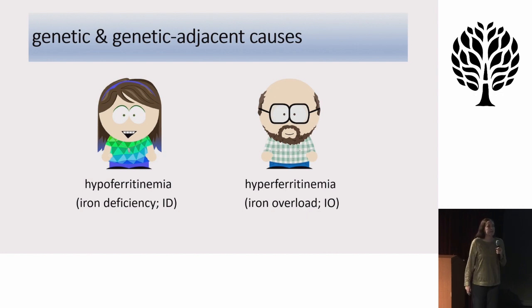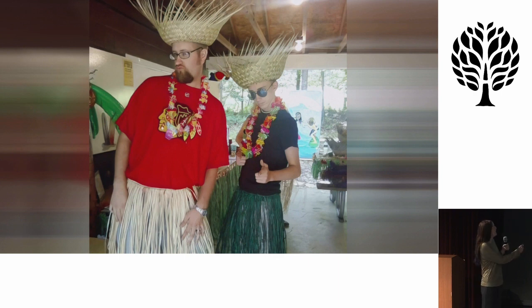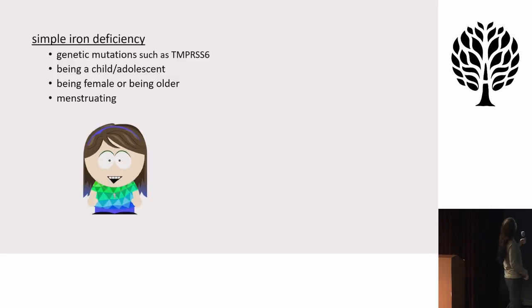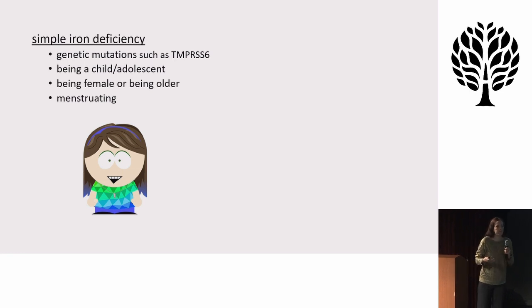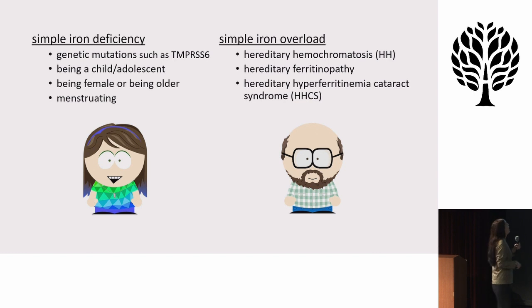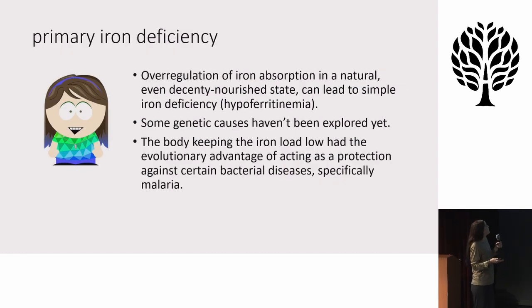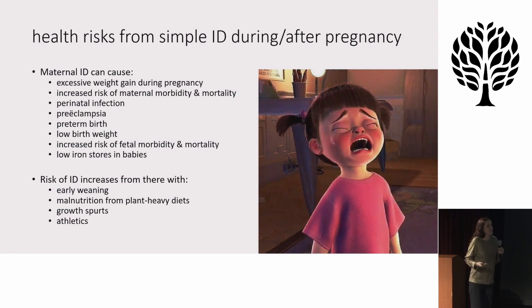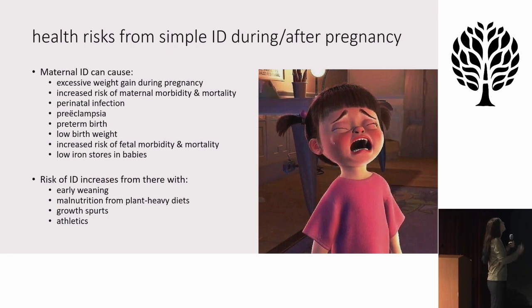One cause of iron dysregulation is genetics. Simple iron deficiency — many mutations haven't been studied yet, but some of it is just being female and menstruating. Oddly enough, you can have severe iron deficiency without menstruating. For iron overload, there are half a dozen different genetic kinds. Under-regulation of iron keeping the iron load low had the evolutionary advantage of acting as protection against certain bacterial diseases, particularly malaria. So at least there's that benefit, even if malaria isn't common where many of us live.